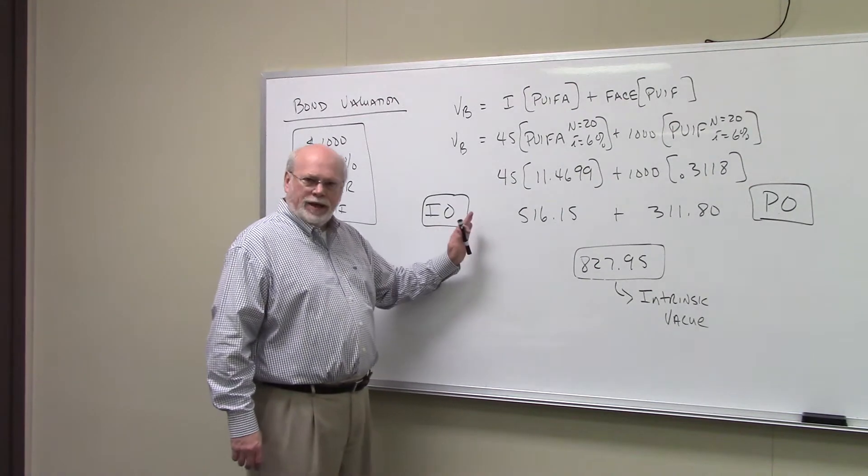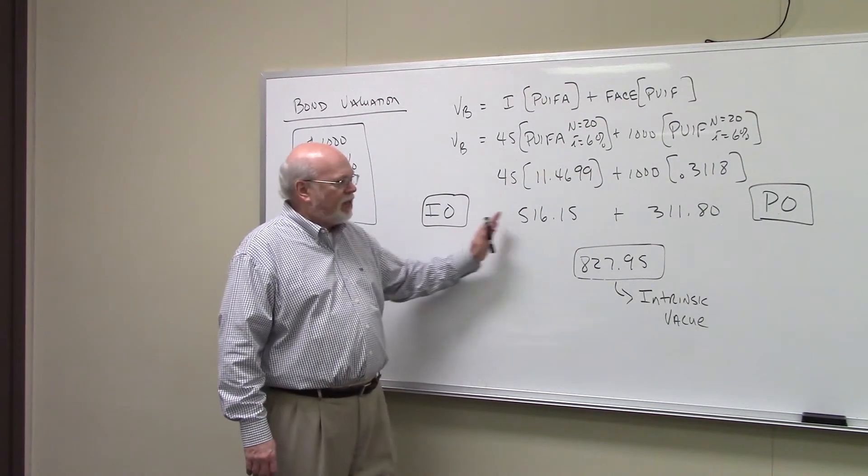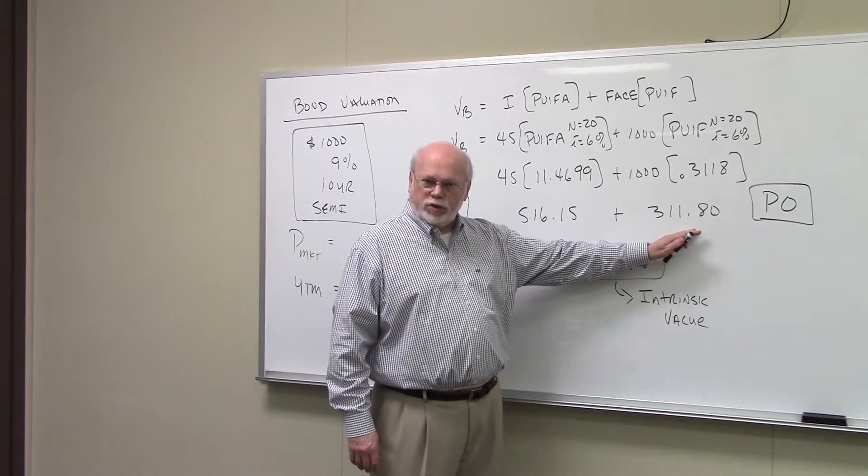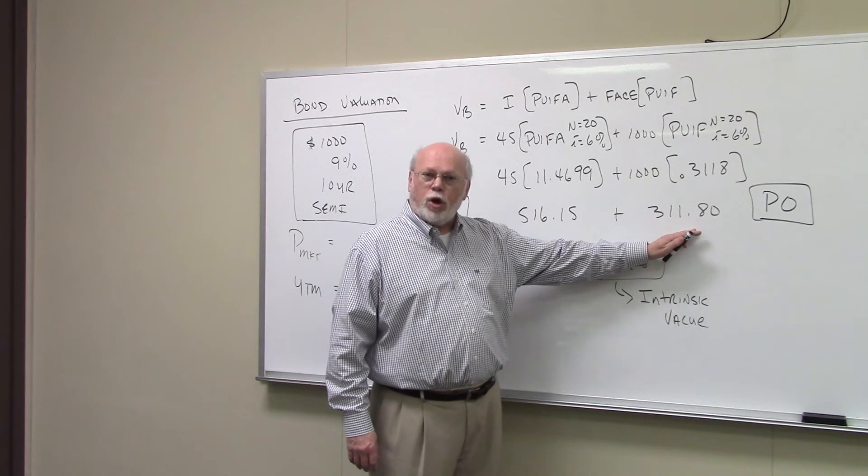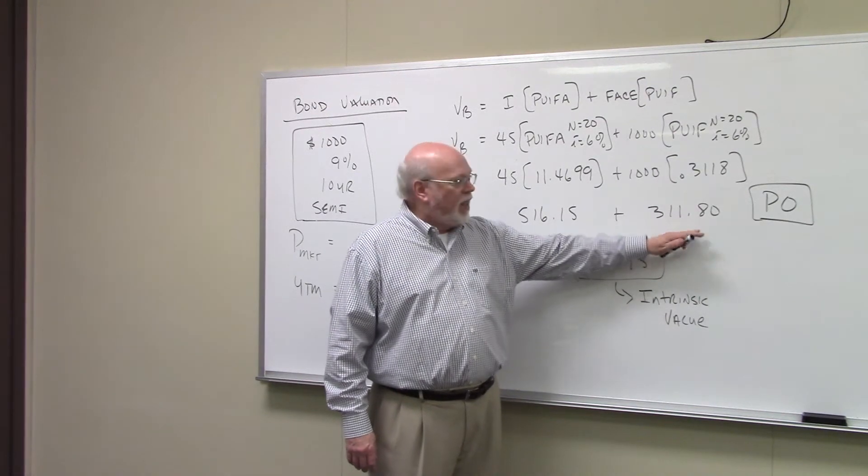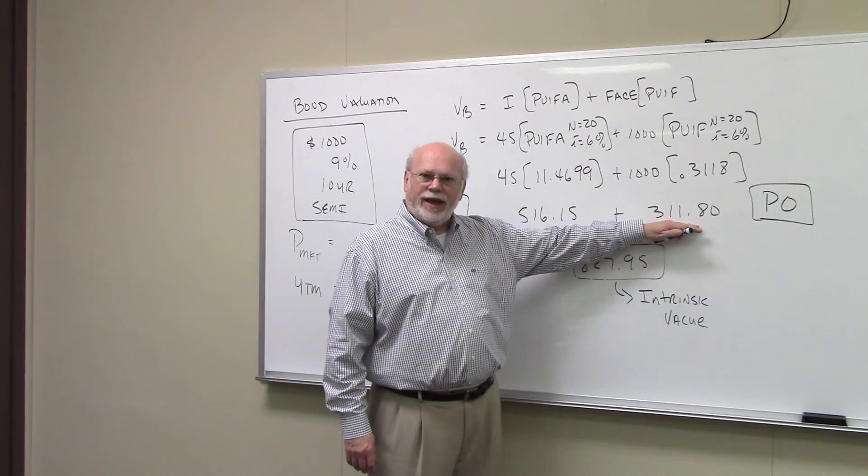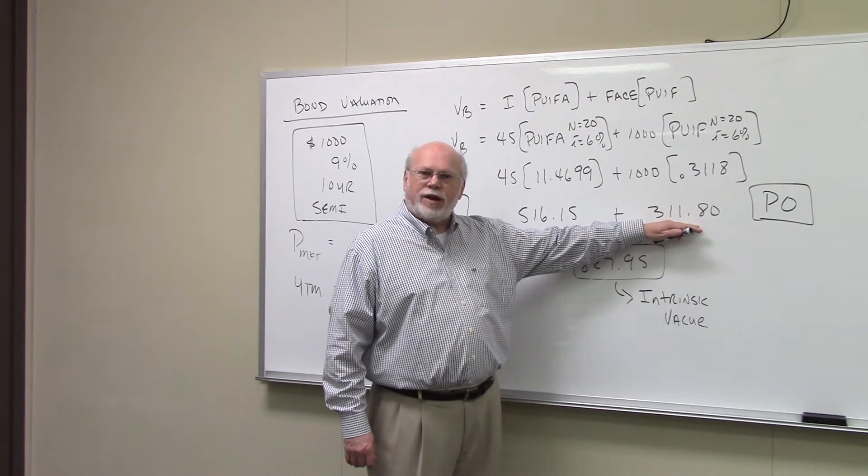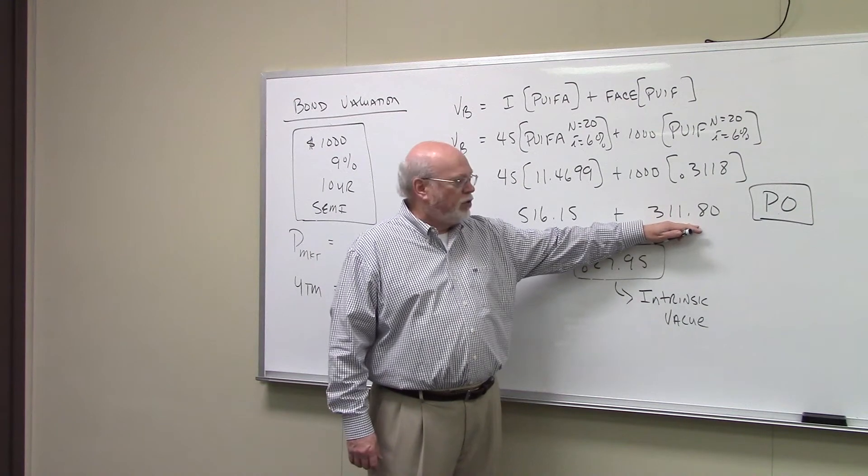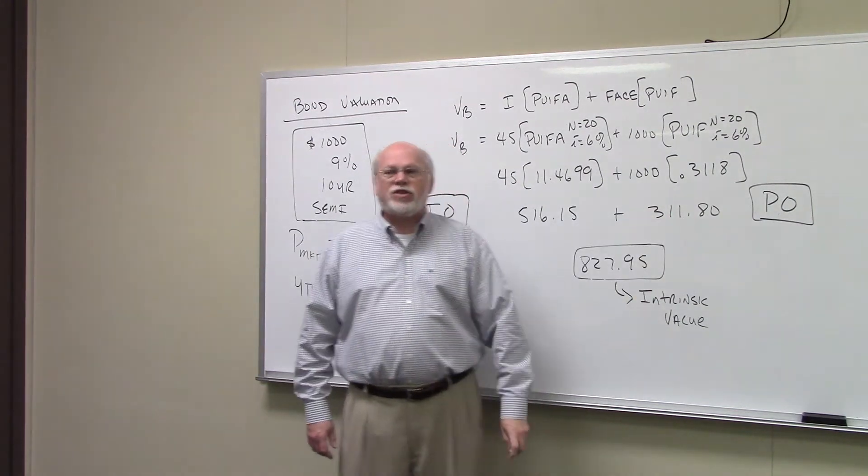People that don't want income, mainly because of taxes, they would be interested in what's called the P-O portion of the bond, the principal-only portion of the bond. And so how much would you pay today to get $1,000 10 years from today? Well, you'd be willing to pay $311.80.